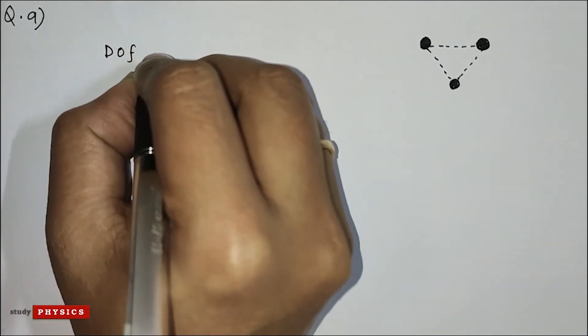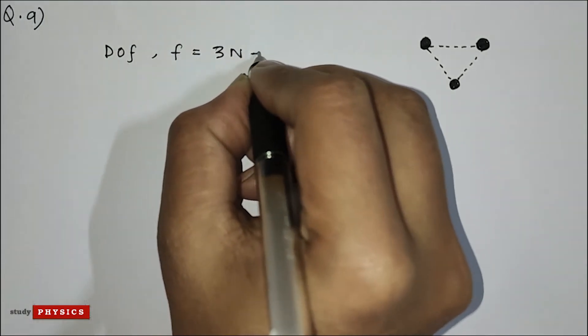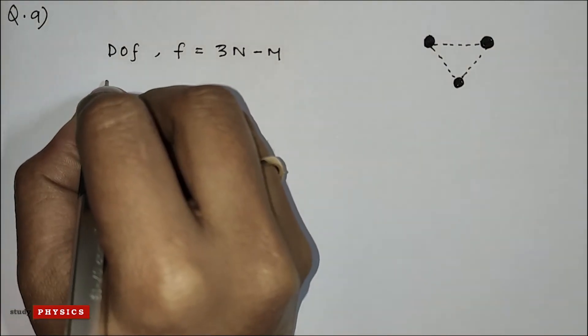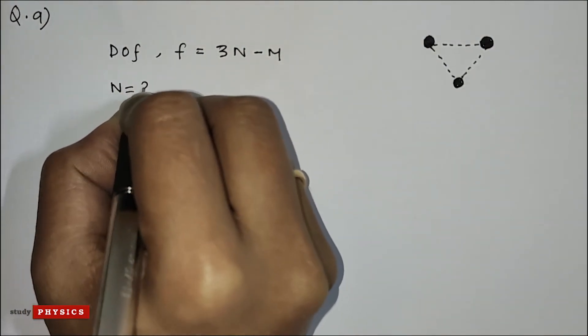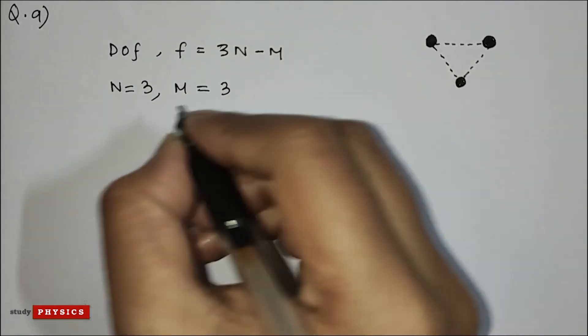Okay, so the degree of freedom F is 3N minus M, where N equals 3 and M is the constraint which is also 3.